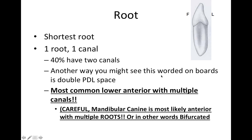Another way you might see this worded on the boards: instead of saying two canals, you might see it as 'double PDL space.' A very common question is: which tooth is the most common lower anterior tooth with multiple canals? Be careful here because the mandibular canine is most likely the tooth with multiple roots — bifurcated. So make sure you're clear on whether they're asking about roots or canals.